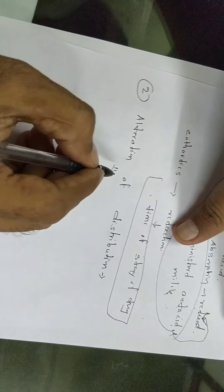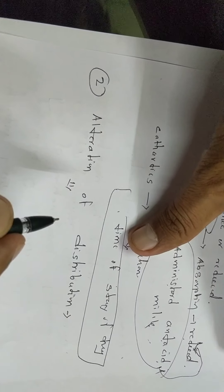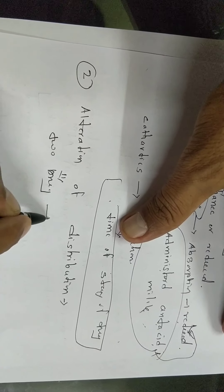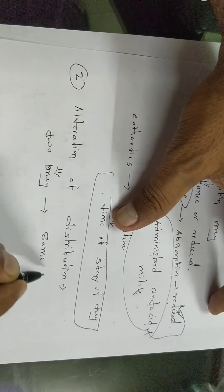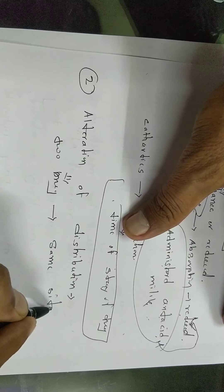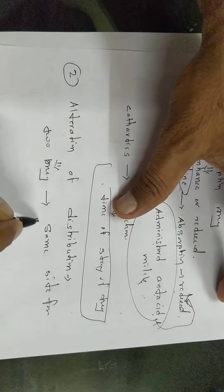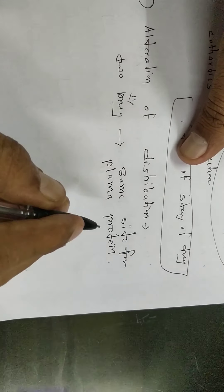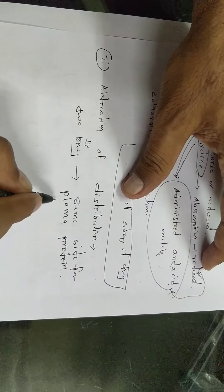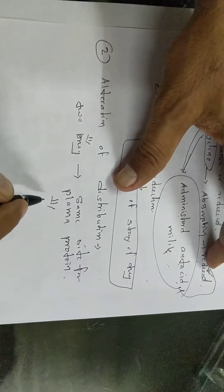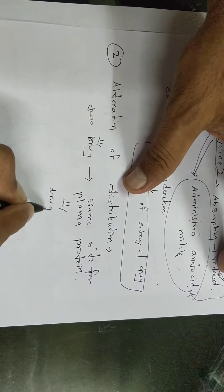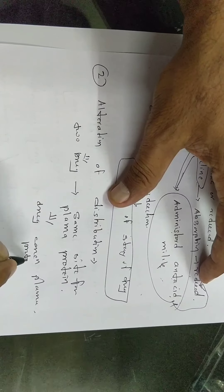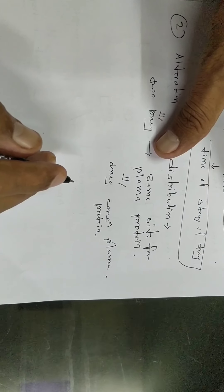Second: alteration of distribution. This can occur when two drugs compete for the same site of binding on plasma proteins. Two drugs can bind to the same site on plasma proteins, and their drug concentration in the plasma is increased.